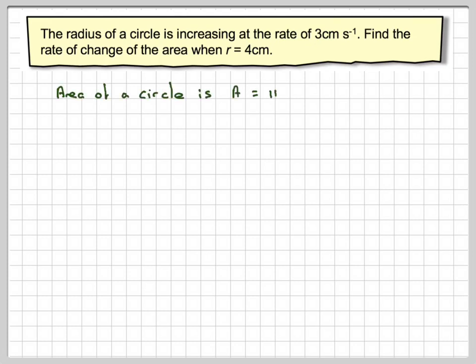The area of a circle, we know the formula to be A is equal to pi r squared. If we differentiate that, we get dA with respect to r, so dA dr. That will give me, bring that 2 down in front, we're going to get 2 pi, it's just a constant, so we'll leave it as it is, 2 pi r.